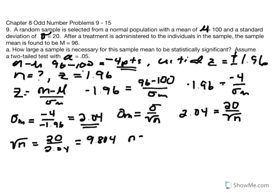To solve for n, we take 9.804 and square it. We find that n equals 96.12. We can round to two digits right of the decimal as standard. So, given the original parameters, using a two-tailed test setting the critical region at positive/negative 1.96, and because the sample mean is less than the population mean we use negative 1.96, we determined the standard error equals 2.04. A sample size of 96.12 will generate that standard error and equal a z value of negative 1.96.